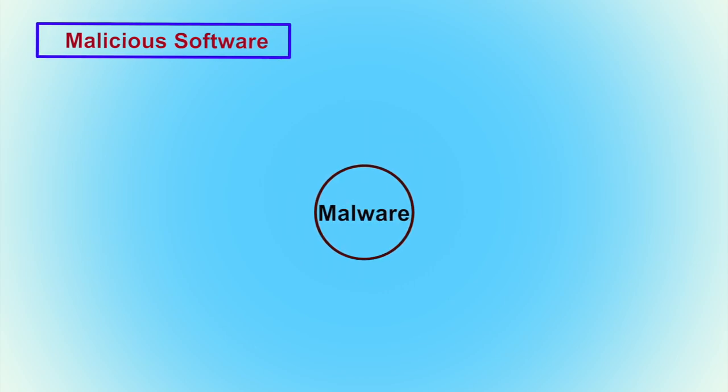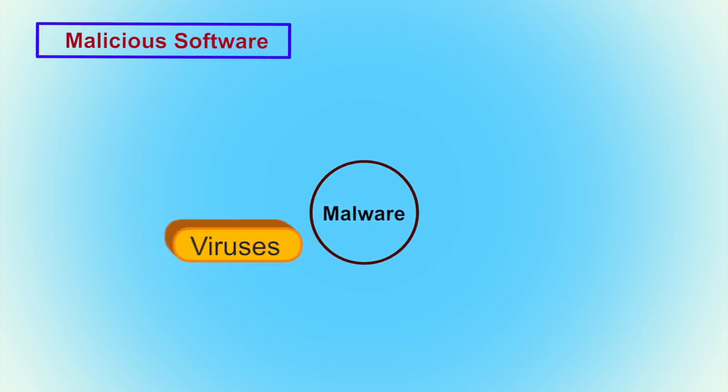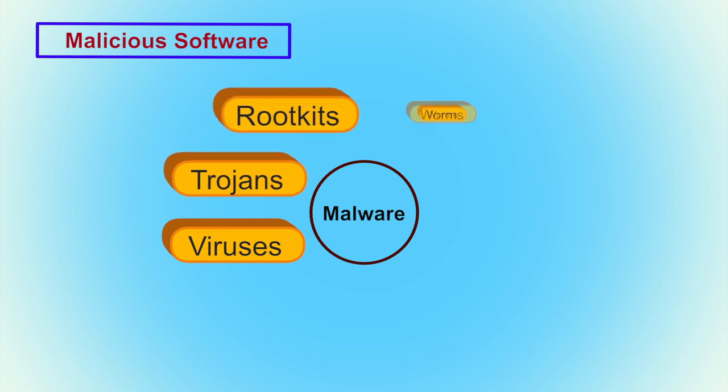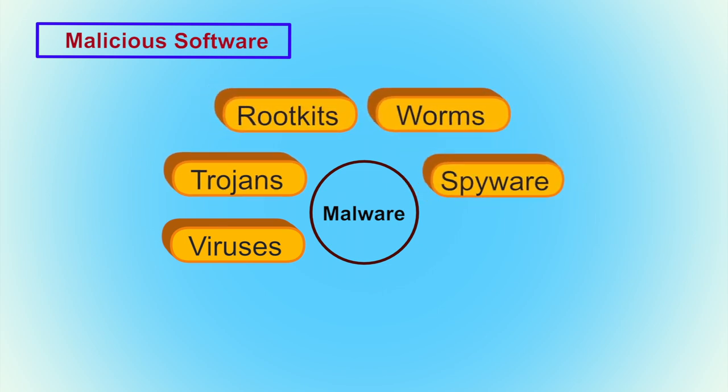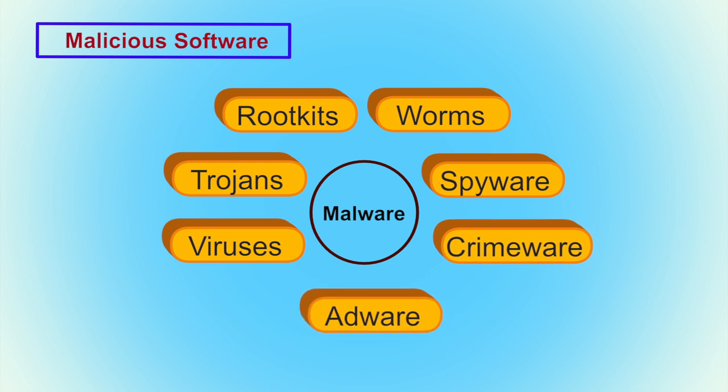We will discuss prevention measures later. Now I am going to discuss a different category of security risk with social networking websites — malicious software. In malicious software there are various variants and categories: viruses, trojans, rootkits, worms, spyware, crimeware, and adware. These are all different categories of software that will create problems for the user or harm their information assets.